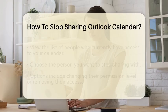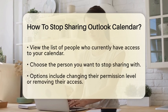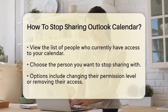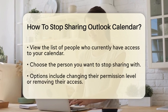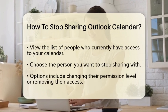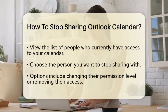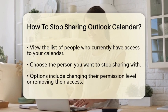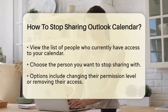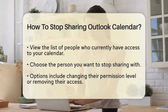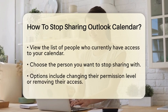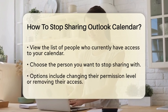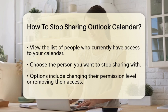Next, look for the option labeled Permissions in the context menu. Selecting this option will allow you to manage who has access to your calendar. Now you will see a list of people who currently have access to your calendar. Find the person you wish to stop sharing your calendar with.